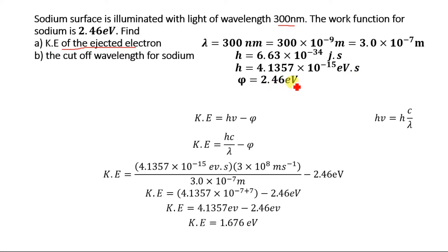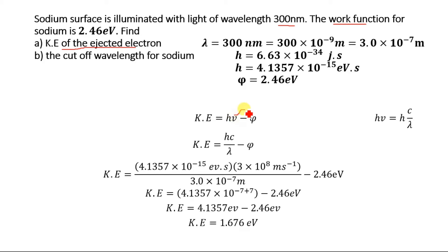The work function is given as 2.46 electron volt. The work function is actually the minimum energy required for the ejection of an electron from the surface of a metal or any other atom. From the photoelectric effect, we know that the kinetic energy is equal to h·mu minus the work function, where h is Planck's constant and mu represents the frequency. This frequency term mu is equal to c divided by lambda.